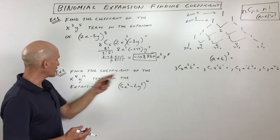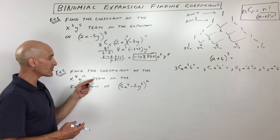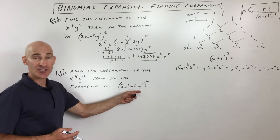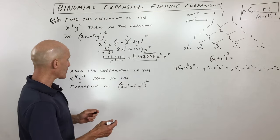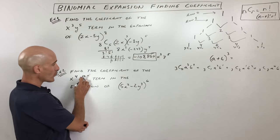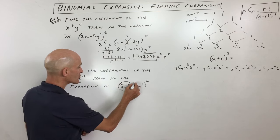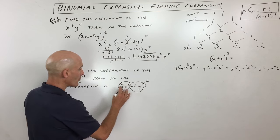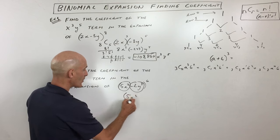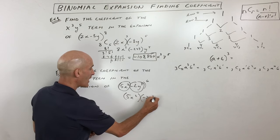It says, find the coefficient of the x to the fourth y to the twelfth term in this expansion. So we're already a little bit more experienced now. So we say, hmm, x to the fourth y to the twelfth. Well, you can see these are our two terms right here in our binomial. Bi means two. So 5x squared and negative 2y to the third.